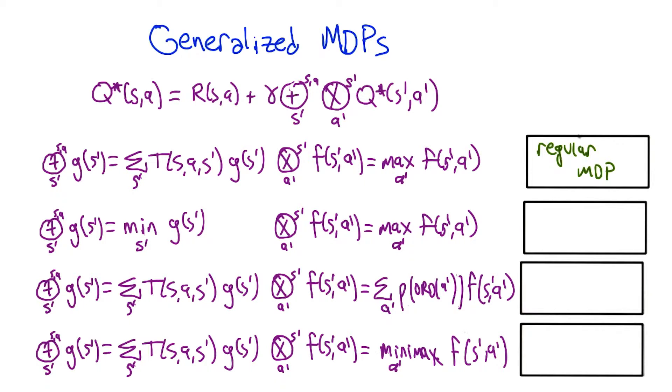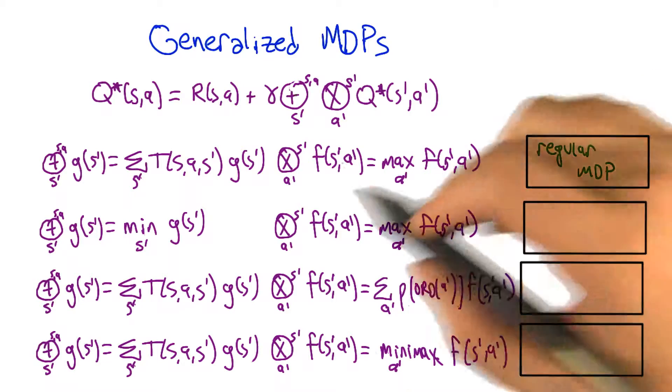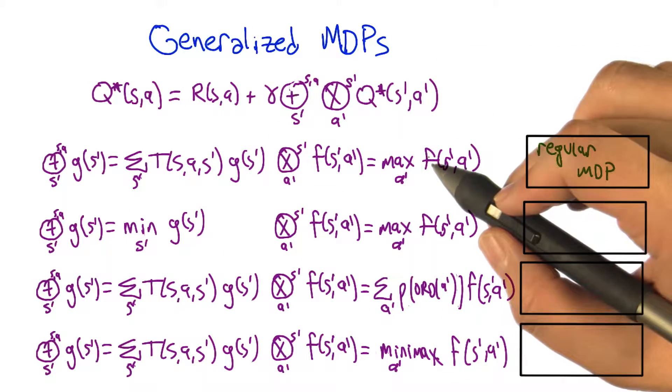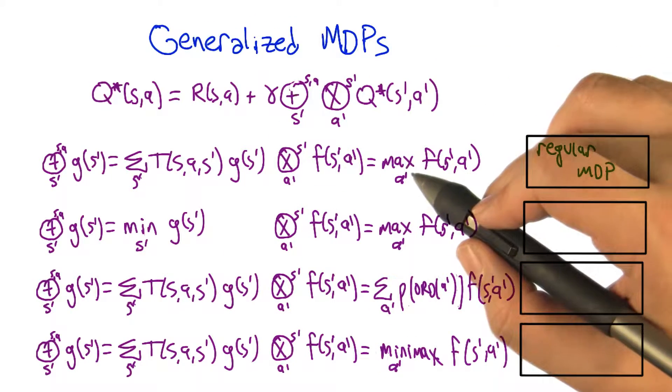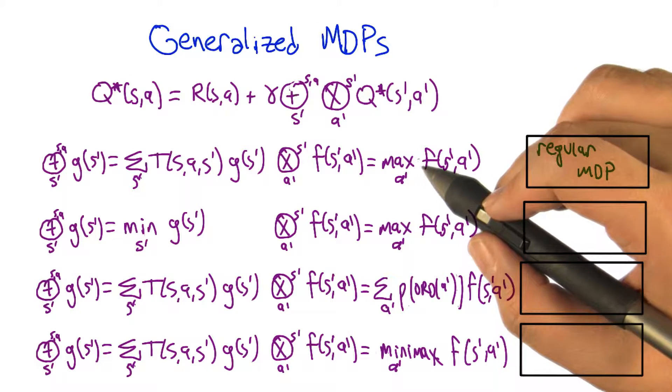All right, so if the first one is a regular MDP, and what makes it a regular MDP is that you're doing an expectation over the next best action that will be taken, right? Right, the best next action, I would say. Right, that's right, that's the right way of saying it.